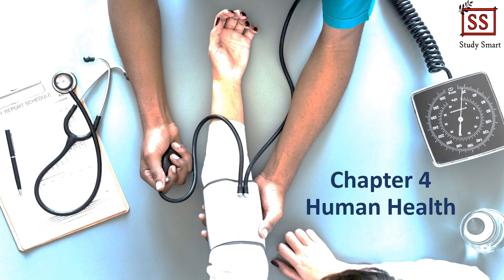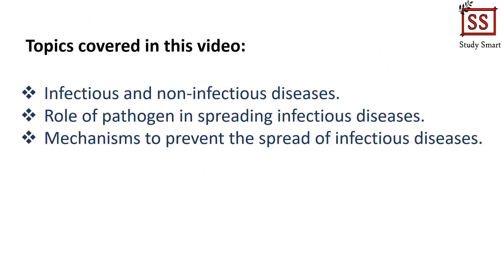Hello students, welcome back to Study Smart channel. We are already in Chapter 4 of Form 2 Science: Human Health, a very important topic and you can expect exam questions from this topic. The topics covered in this video are the definition of infectious and non-infectious disease, the role of pathogens in spreading infectious disease, and the mechanisms to prevent the spread of infectious disease.